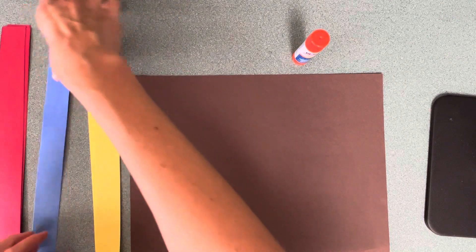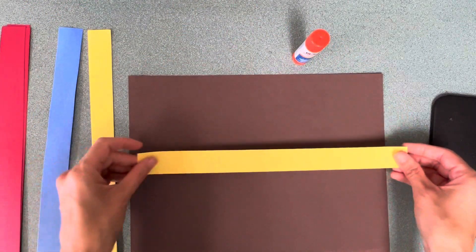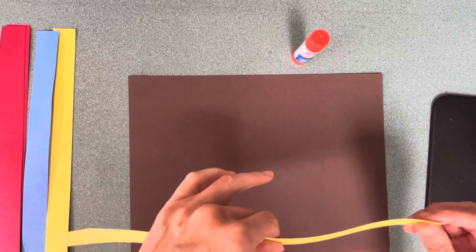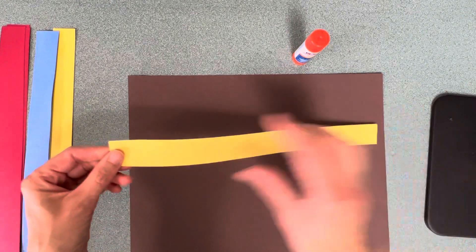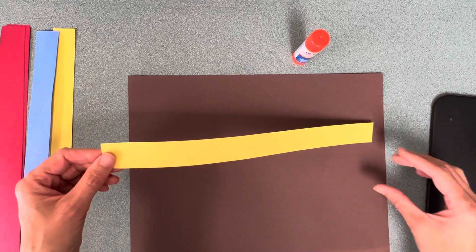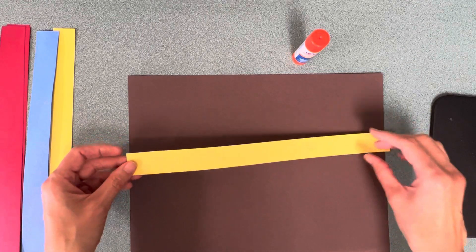What we're going to do is you are going to get different strips of paper and we are going to connect the strips of paper to the big paper. These strips are like long lines. Lines are super important in art.